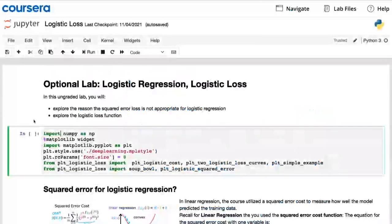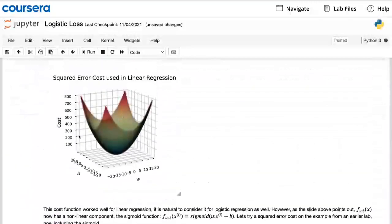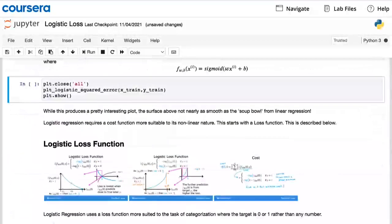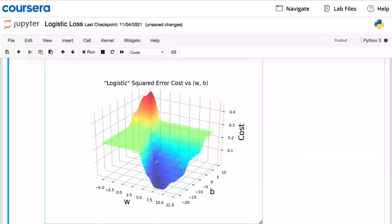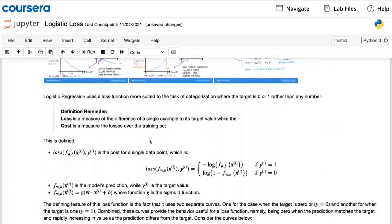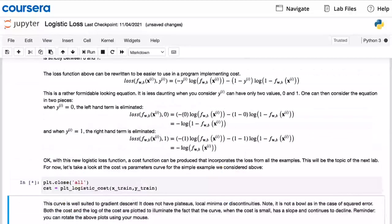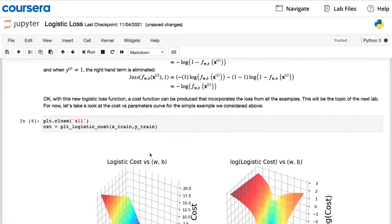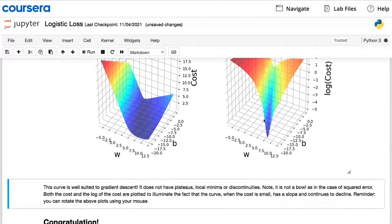In the upcoming optional lab, you get to take a look at how the squared error cost function doesn't work very well for classification because you see that the surface plot results in a very weakly cost surface with many local minima. Then you take a look at the new logistic loss function. And as you can see here, this produces a nice and smooth convex surface plot that does not have all those local minima. So please take a look at the code and the plots after this video.